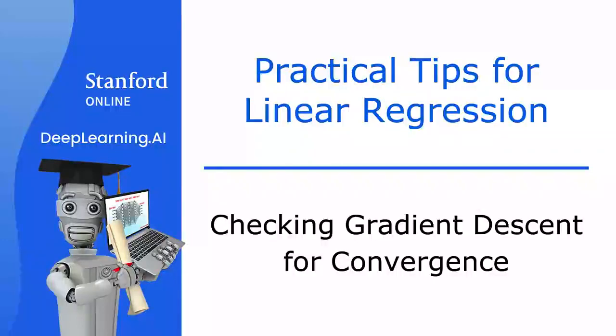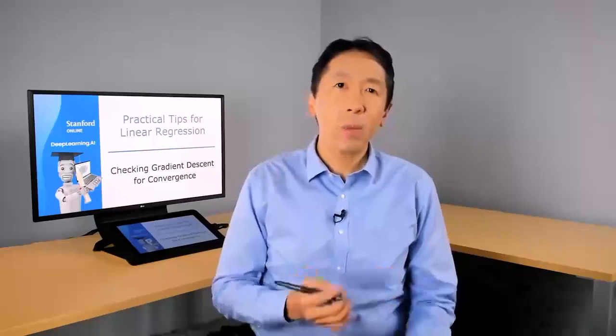When running gradient descent, how can you tell if it is converging, that is, whether it's helping you to find parameters close to the global minimum of the cost function? By learning to recognize what a well-running implementation of gradient descent looks like, we will also, in a later video, be better able to choose a good learning rate alpha. Let's take a look.